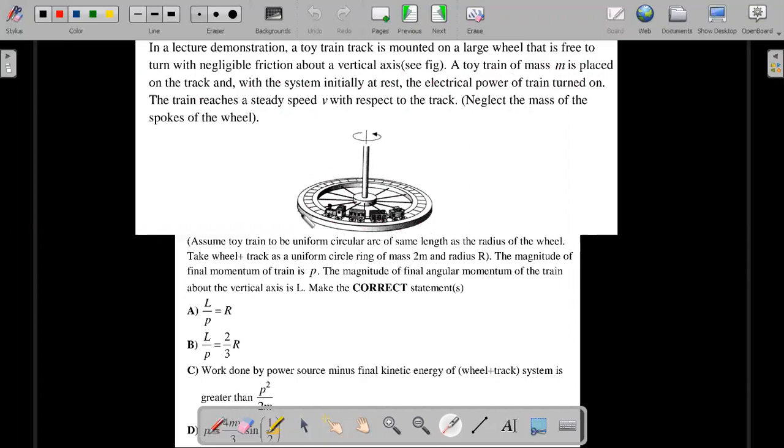So this wheel is being considered to be almost like a ring, the wheel or whatever the track that the wheel is mounted on. The basic assumptions to solve our problem are written below the diagram. Assume toy train to be a uniform circular arc of length same as the radius of the wheel. So the arc length and the radius are exactly the same. Take the wheel and track as uniform circular ring of mass 2m and radius capital R. So the train's mass is M, it's a circular arc length same as the radius, and the track itself is of mass 2m and it's considered to be a ring of radius R. The magnitude of final momentum of the train is P. The magnitude of final angular momentum of the train about the vertical axis of rotation is capital L. So these are both magnitudes.